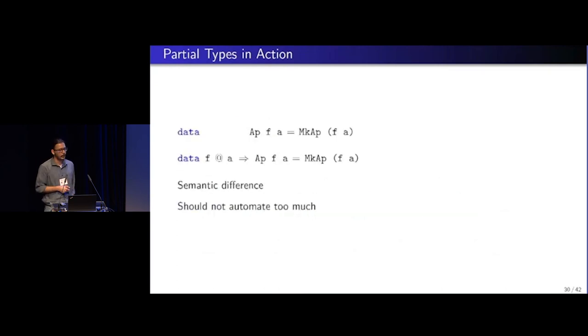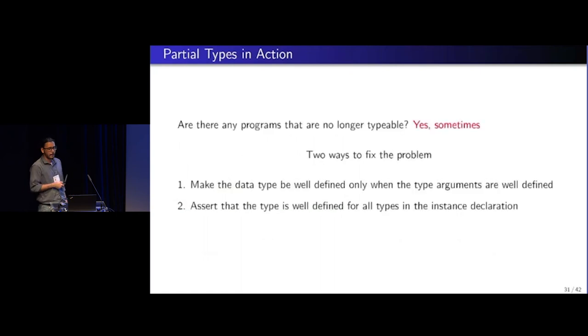So you might be thinking that there were these two options of writing app f a, right? And we might have as well chosen to automatically elaborate this argument out to the data type context. But we don't want to do that, because we want the user to decide what it exactly should be. Because they mean different things. So are there programs that are no longer typeable? Yes, sometimes. And we have two ways to fix them.